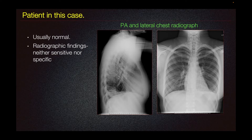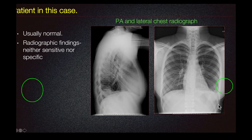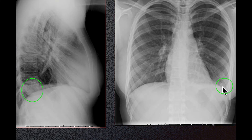The patient in this case presented with this PA and lateral chest radiograph. In patients with pulmonary embolism, radiographs are usually normal. There are described radiographic findings that are neither sensitive nor specific. The patient's radiograph demonstrates blunting of the left costophrenic angle, which is nonspecific and may represent small atelectasis or pleural effusion.